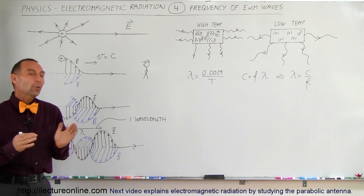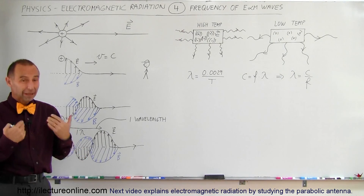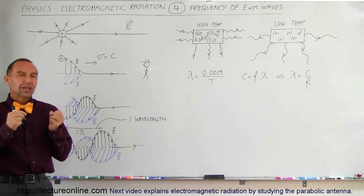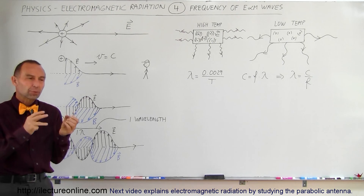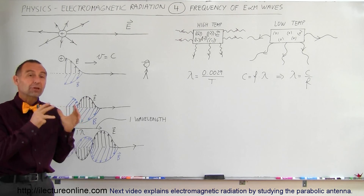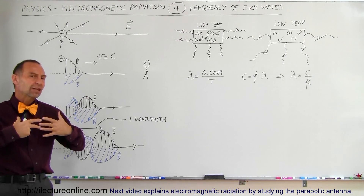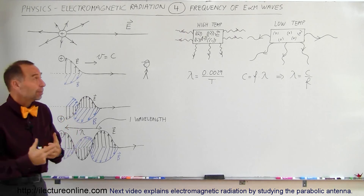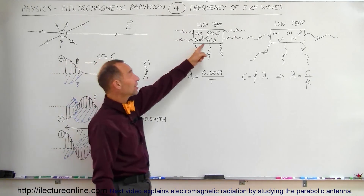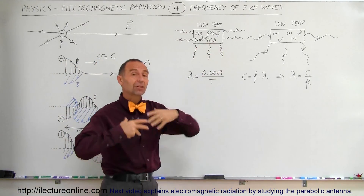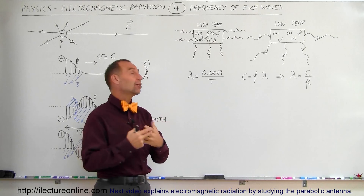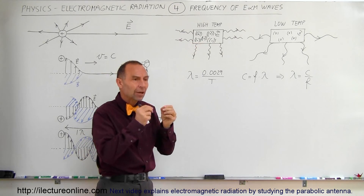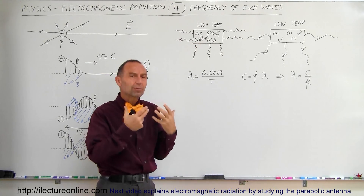Welcome to ElectronLine. Another way in which we can get a better understanding of electromagnetic radiation is to understand the relationship between the temperature of an object and the kind of radiation that is emanated from that object. Remember from the previous video that every object emanates electromagnetic radiation because the atoms inside will be vibrating according to their temperature.